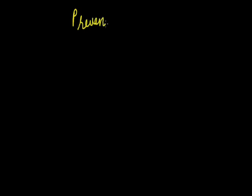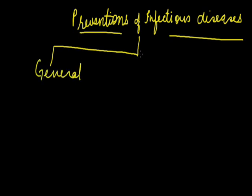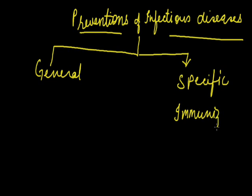Hello children. In the last lecture we talked about some of the preventive measures of infectious diseases. There are two methods: the first can be called a general preventive method and the second a specific preventive measure. In this specific method we can talk about immunization, which we left to be discussed in the next lecture. So today we are going to discuss immunization in detail.